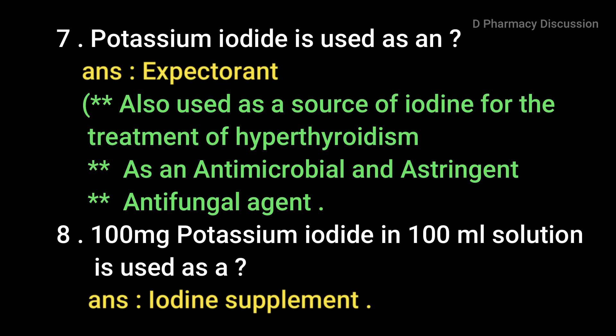Next question: potassium iodide is used as an expectorant. The usual expectorant dose is 300 mg four times a day. It may also be used for the prophylaxis and treatment of simple goiter. Larger doses are used for the treatment of hyperthyroidism, and it is also used as an antimicrobial agent, astringent, and antifungal agent in veterinary practice. 800 mg of potassium iodide in 100 ml solution is used as an iodine supplement.